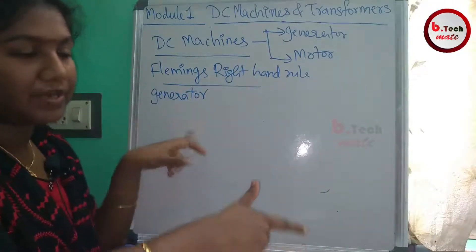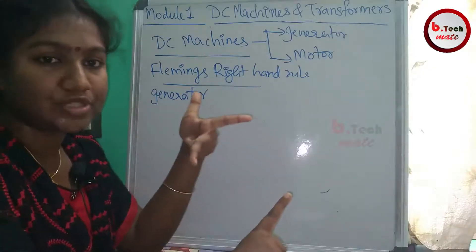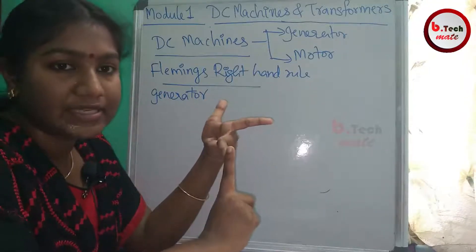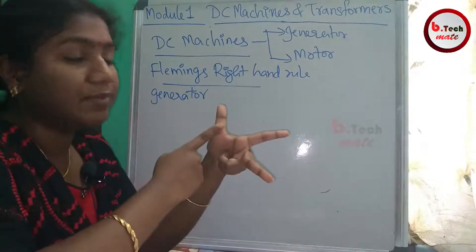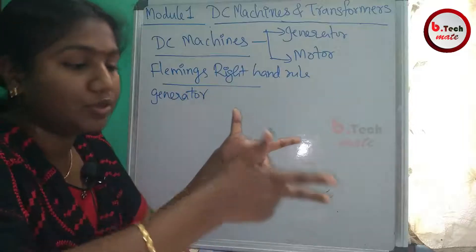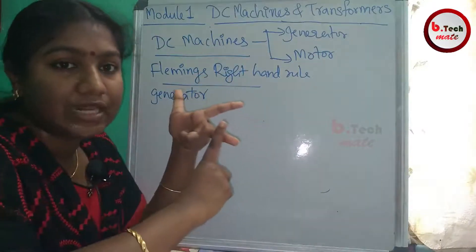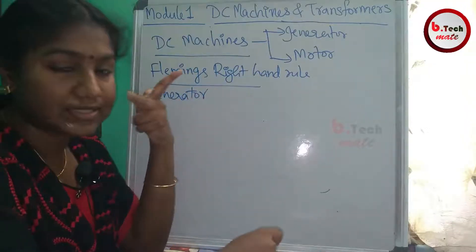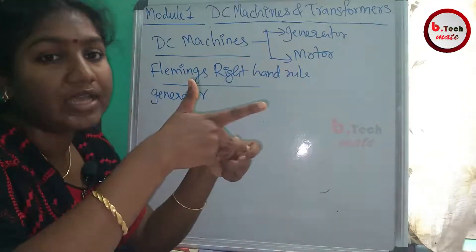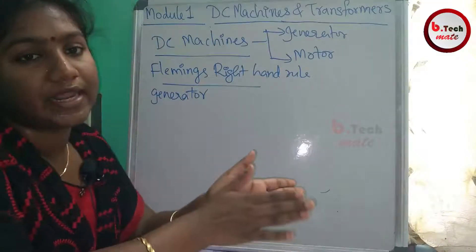Fleming's Right Hand Rule is used for the generator, and Fleming's Left Hand Rule is used for the motor. For the Left Hand Rule, hold the forefinger, middle finger, and thumb mutually perpendicular. The forefinger indicates the direction of the field, the middle finger indicates the direction of force, and the thumb indicates the direction of motion. The key difference is that in the generator the middle finger gives induced EMF, while in the motor the middle finger gives direction of force.